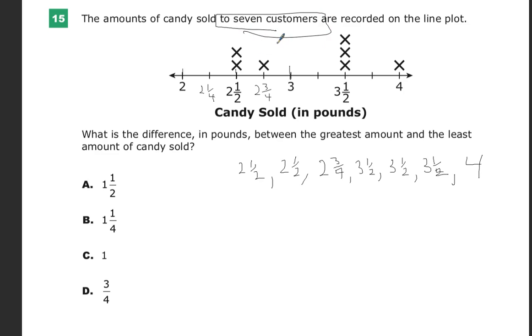What's the difference in pounds? Now, difference is a math word, and it's not sum, so it's not addition. It's not product, so it's not multiply. It's not quotient, so it's not divide. Difference means subtract. What's the difference? How far apart are they? What separates them? Between the greatest amount and the least amount of candy. So I need to pay attention to this, and I need to pay attention to this. So essentially, 4 minus 2 and 1⁄2.